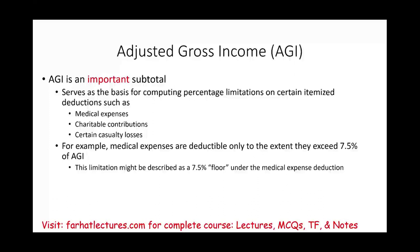Let's talk about AGI. AGI is an important subtotal because it serves as the basis for computing percentage limitations on certain itemized deductions. There are certain deductions we take based on AGI, so whatever number we arrive at for AGI is going to determine our itemized deductions.